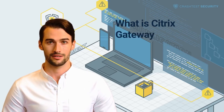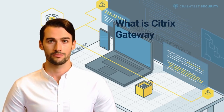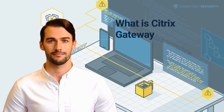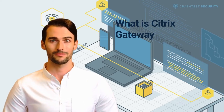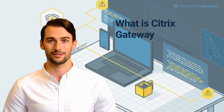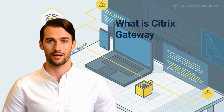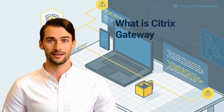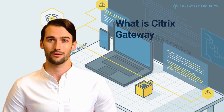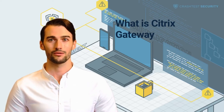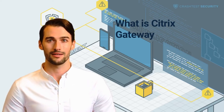The Citrix Gateway service is one of the main products provided under the ADC line. It is a zero-trust network access solution that functions as a virtual server and allows end users to gain remote access to web, mobile, enterprise, and cloud apps from any device through one access point. Access is provided based on user roles, location, and the device's state to guarantee that apps and data will be adequately protected. The Gateway also provides users with server load balancing to improve app access.